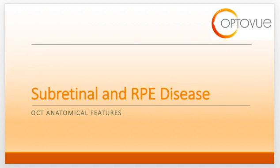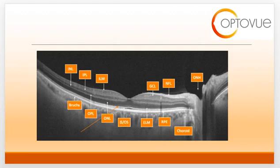Welcome to webinar number five. I'm Dr. Julie Rodman. In this webinar, I will discuss the topic of subretinal and RPE disease. You may recall this slide from previous webinars. On this slide, I've delineated the various parts of the retina and choroid. The orange arrow is pointing to the subretinal space, which is what we will discuss in this video.